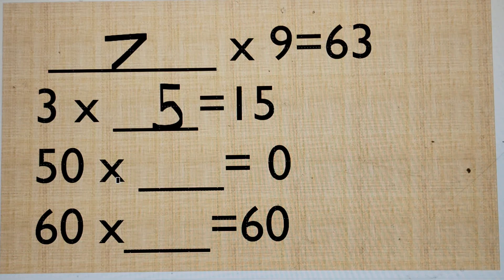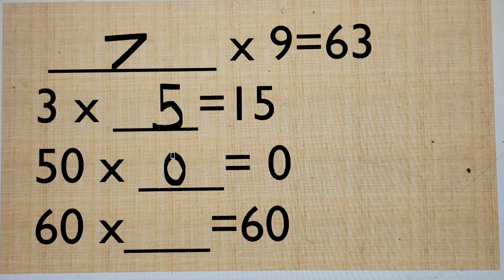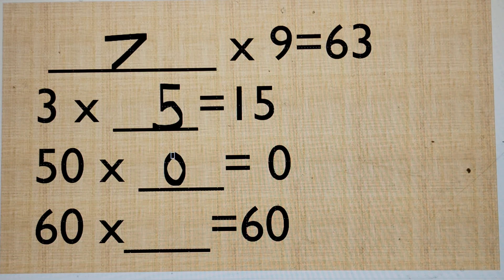Now, what should I multiply with number 50 so that it becomes 0? 0. So, whenever you multiply 0 with any number, it becomes 0.